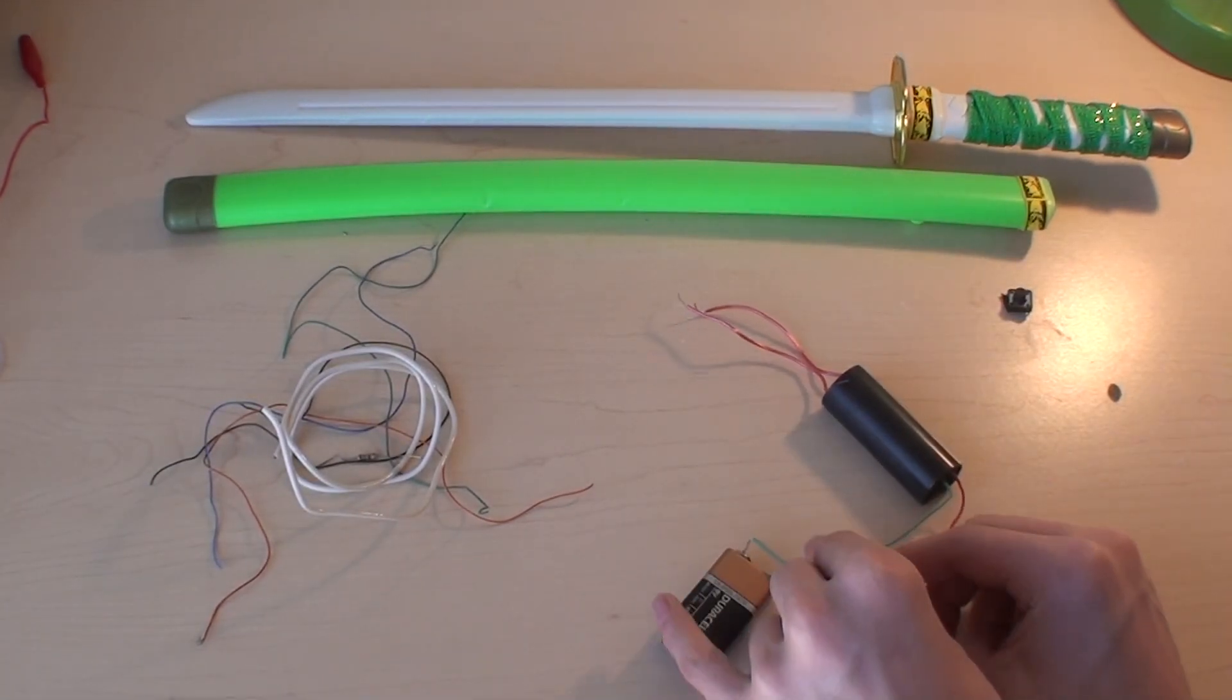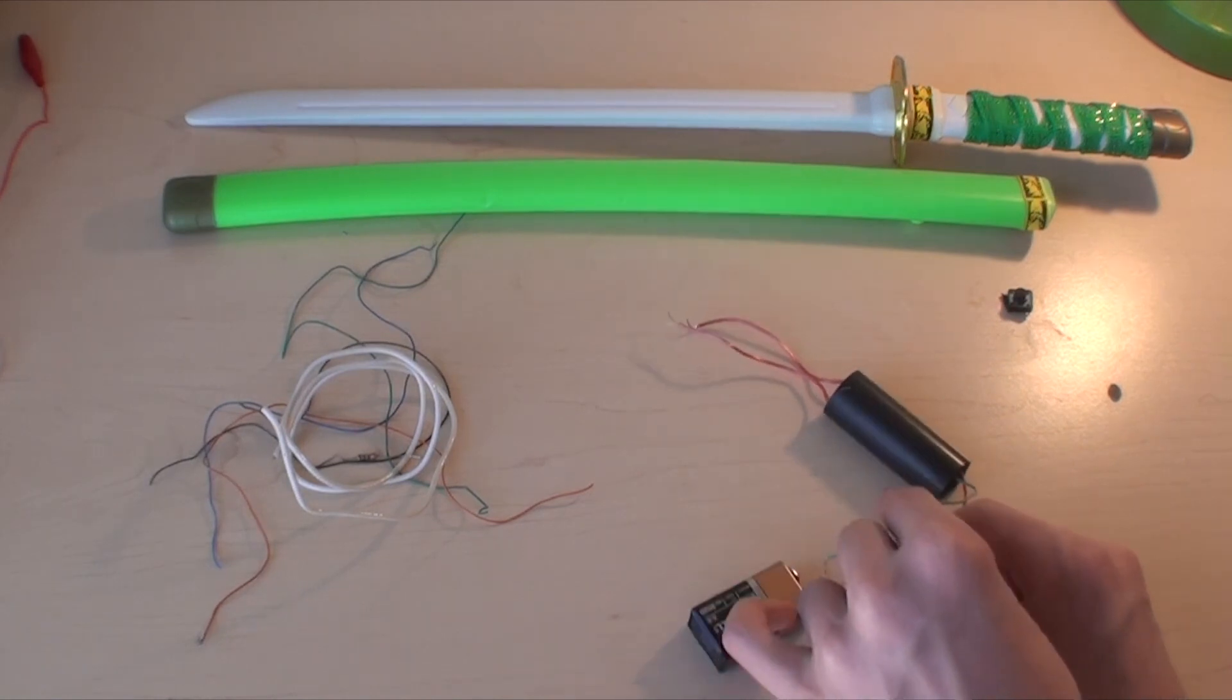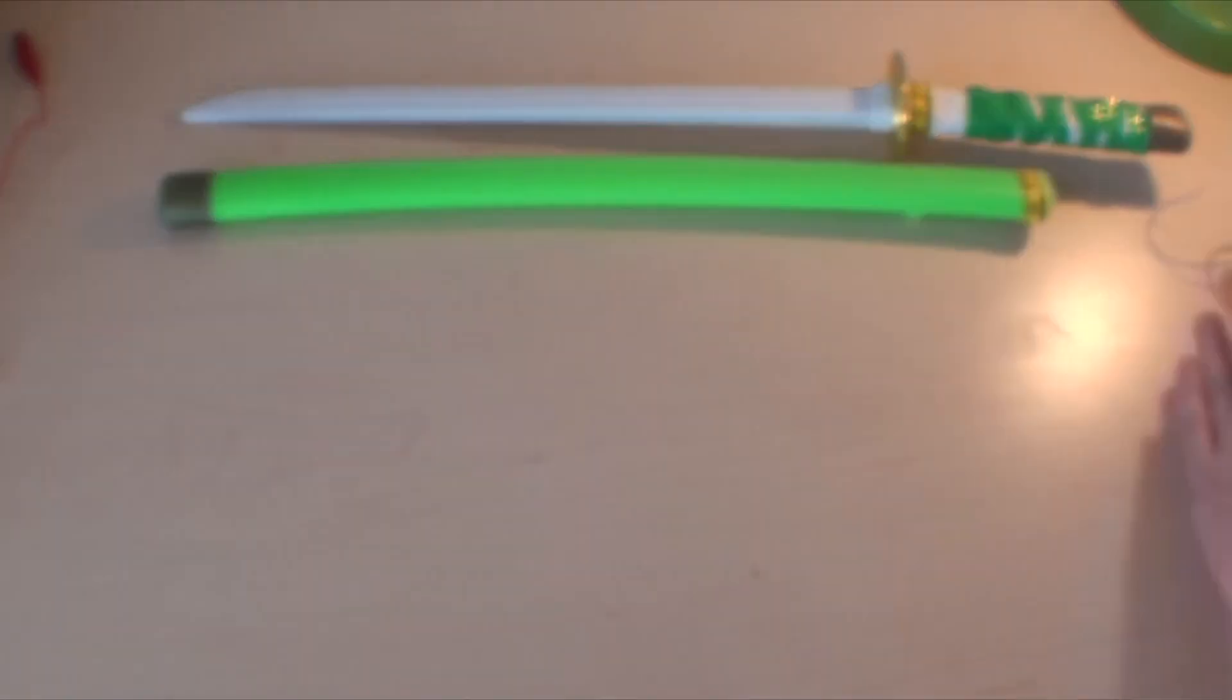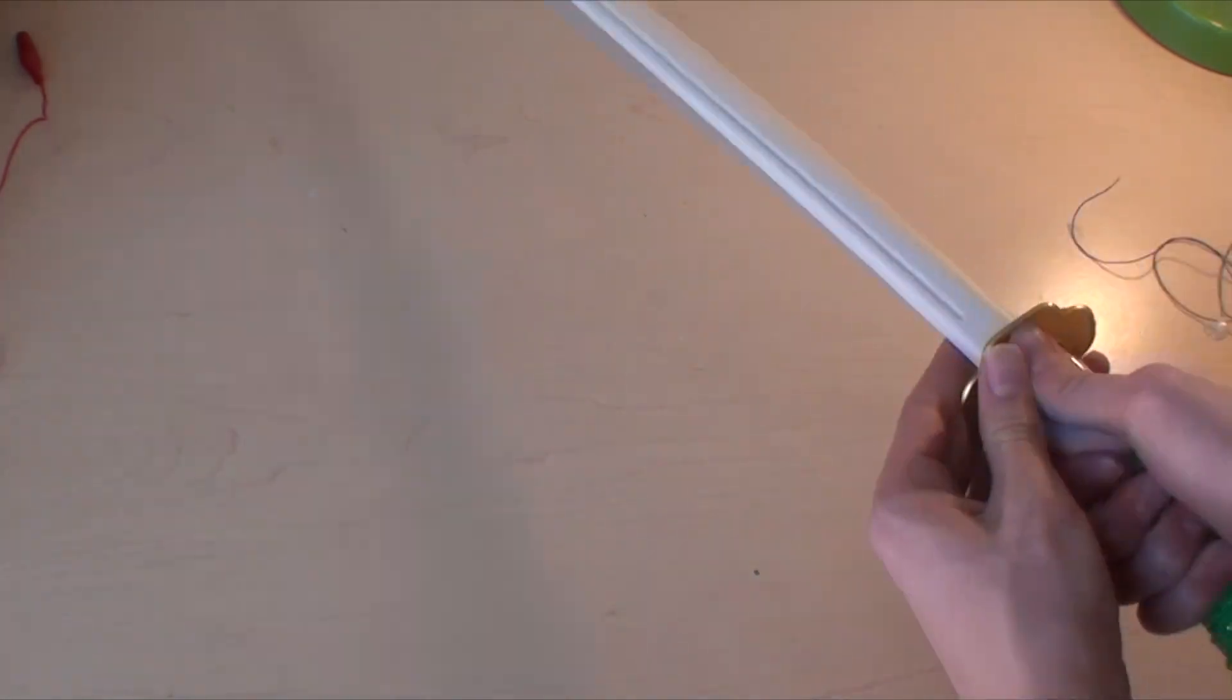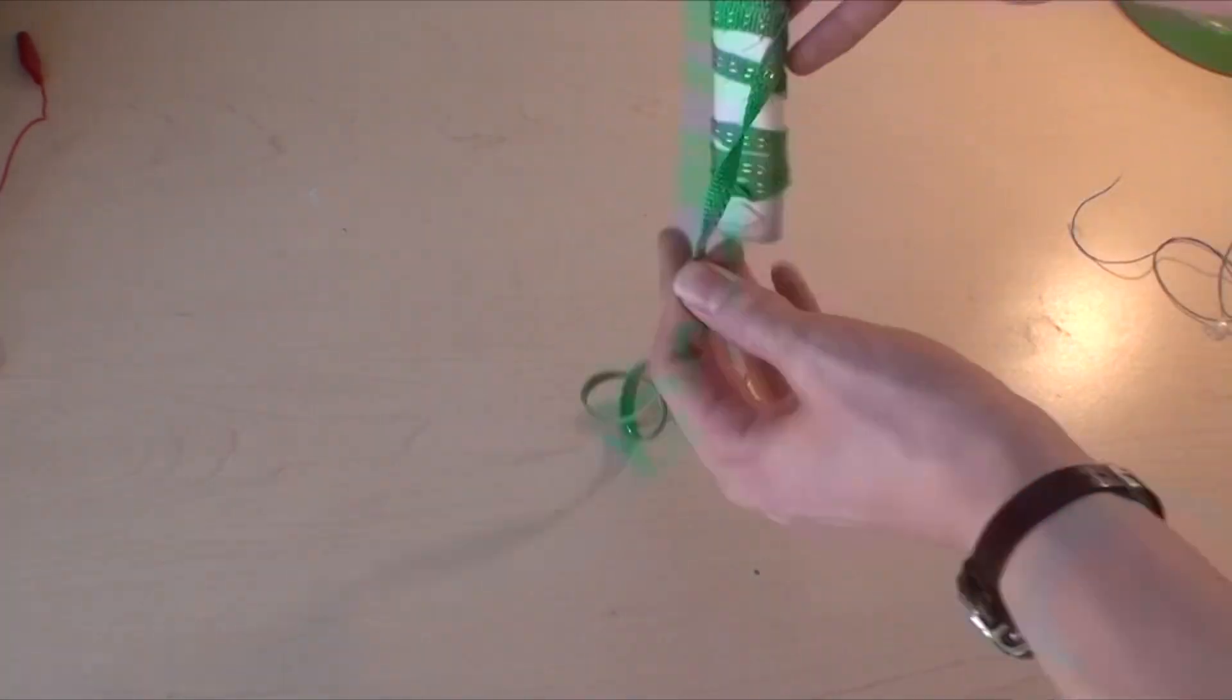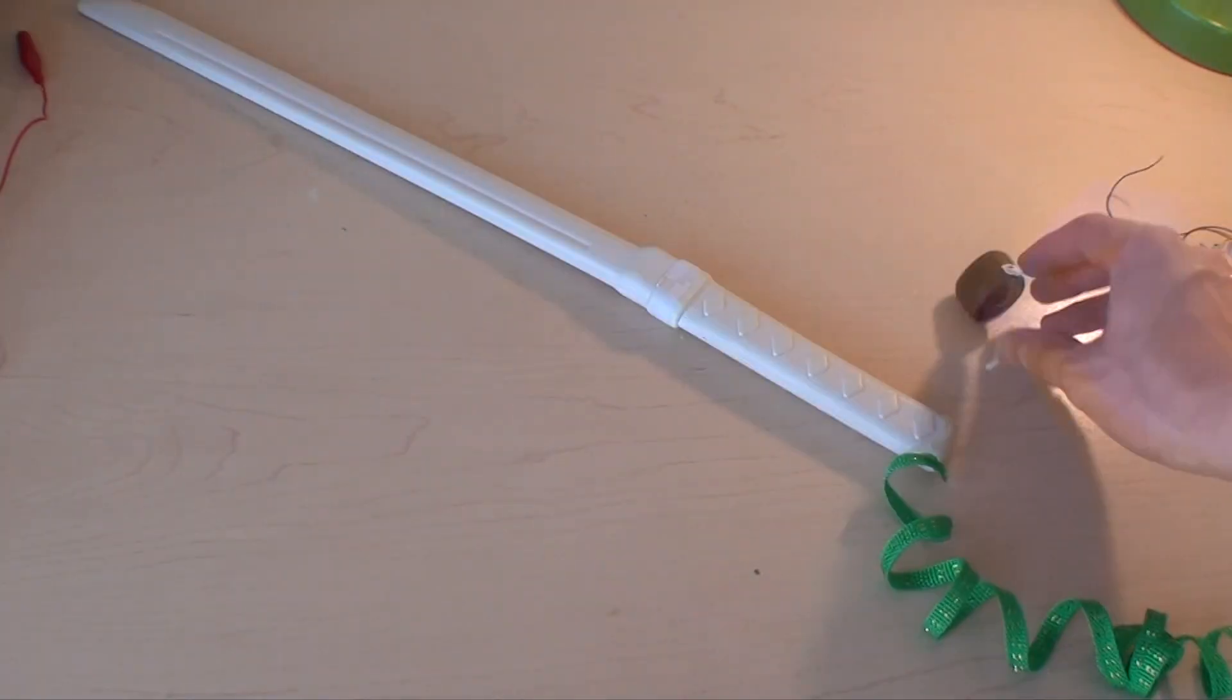These little high voltage transformers work by taking the current from the battery and stepping it up to high voltage. This one says it puts out 400,000 volts. I'm not sure if it's really getting that high, but I don't really have any way to test it. Even if it is that high, the current it's putting out is so low that even if you do zap yourself with it, it won't kill you or anything. This is just powered by a 9 volt battery, so it's not that dangerous.